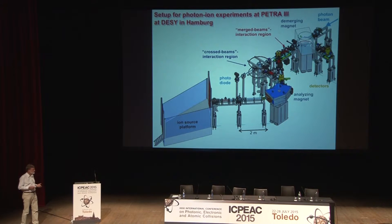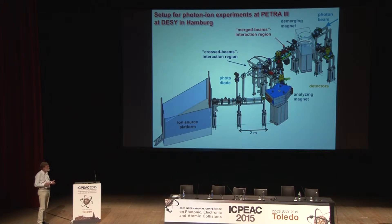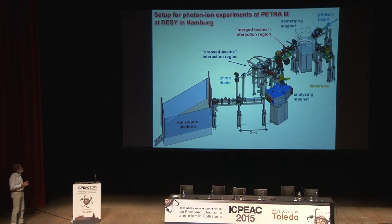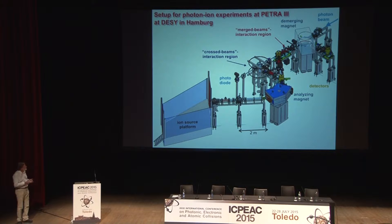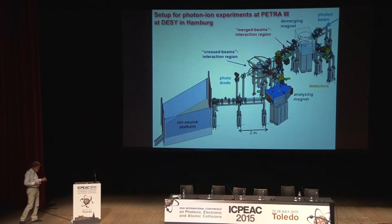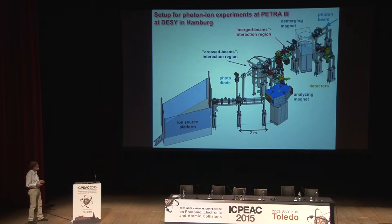We have put a great deal of effort into suppressing background in the detection of ions. The parent ion beam is collected in a Faraday cup inside the magnet. The photon beam is collected on a photodiode. By measuring the geometrical overlaps of the two beams, we can determine absolute cross-sections for photoionization into different final states.